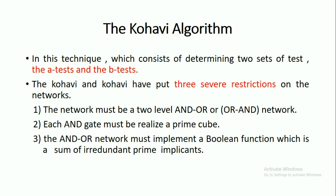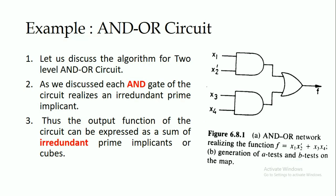By following these three restrictions, we can find out the two sets of tests: the A test and B test. Now consider one example. To understand very easily, here I am taking a simple AND-OR circuit.